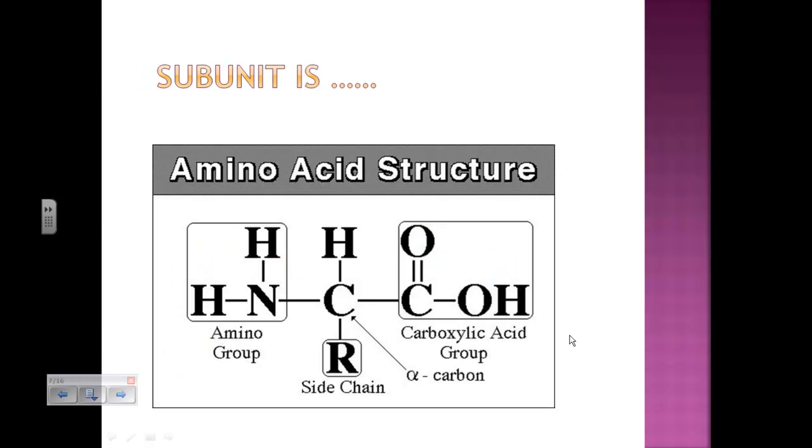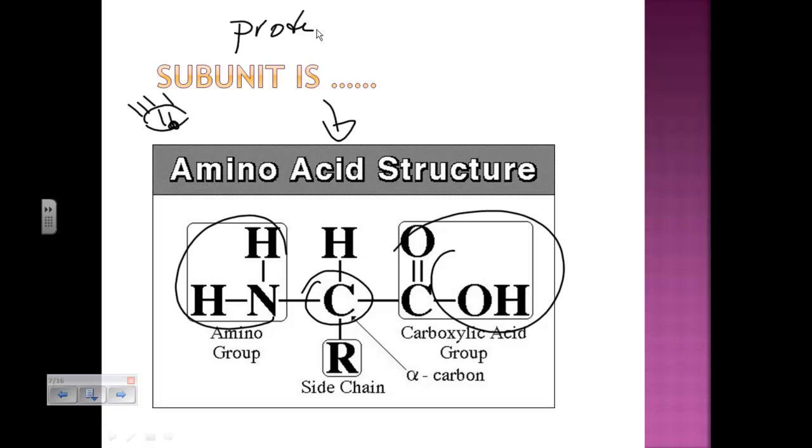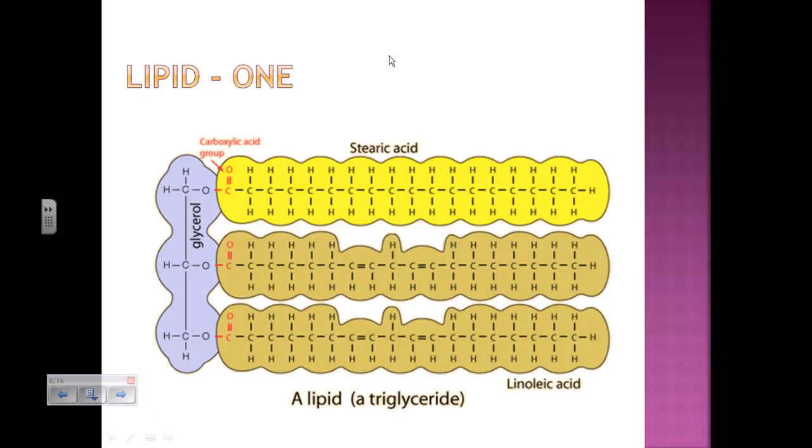Last subunit, the second one, the subunit of our proteins. We recall, we remember how to identify with our eyeballs an amino acid. We see the central carbon, we see the amino group, we see the carboxyl group. This is the subunit of our proteins, and this is going to be what enters our bloodstream.